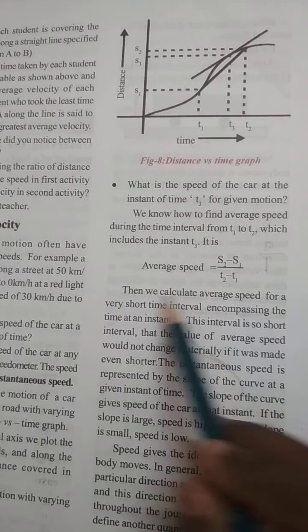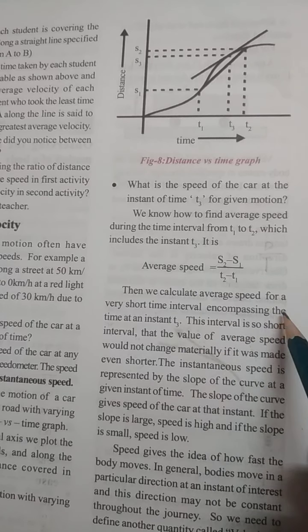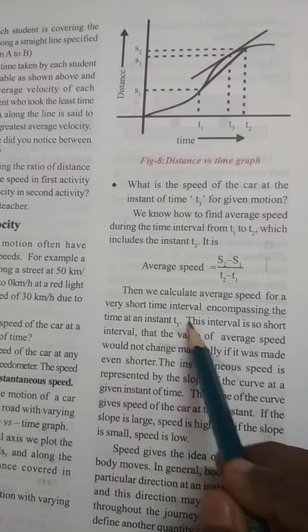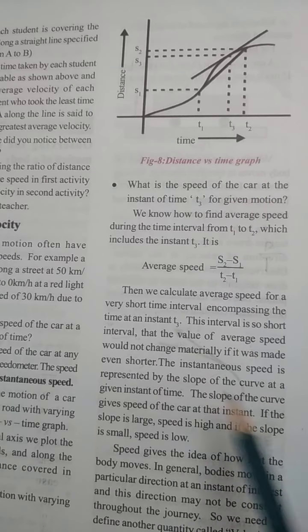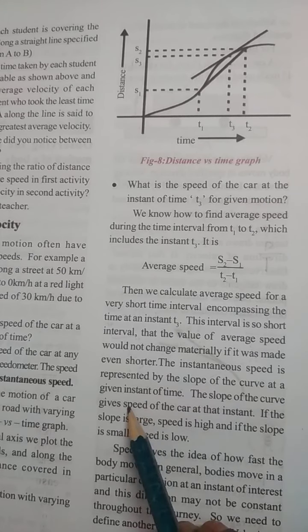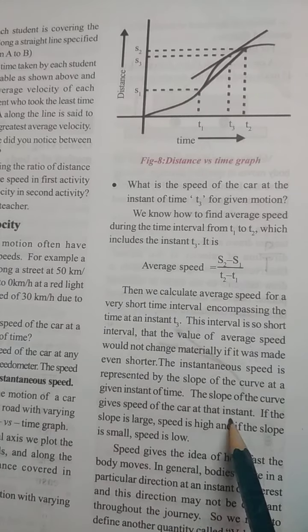Then we calculate average speed for a very short time interval encompassing the time at any instant t3. If this interval is so short that the value of average speed will not change materially if it was made even shorter. The instantaneous speed is represented by the slope of the curve at a given instant of time. The slope of the curve gives speed of the car at that instant.